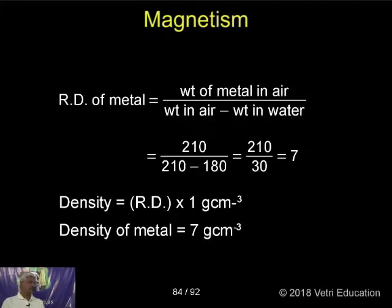Density is equal to relative density times 1 gram per cubic centimeter. Density of metal, that is relative density calculated as 7 times 1, equals 7 grams per cubic centimeter.